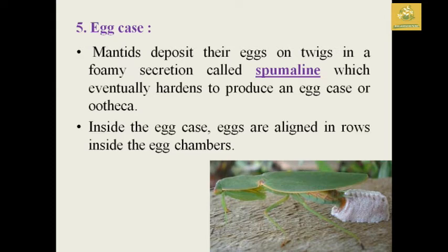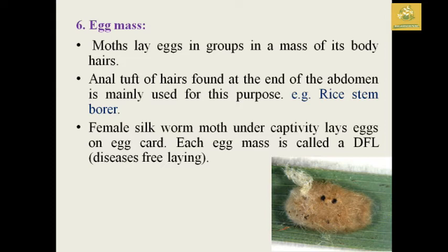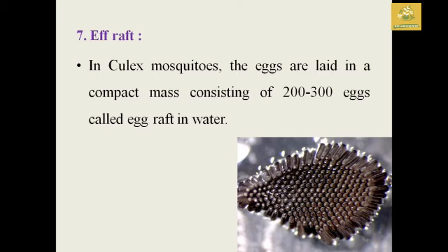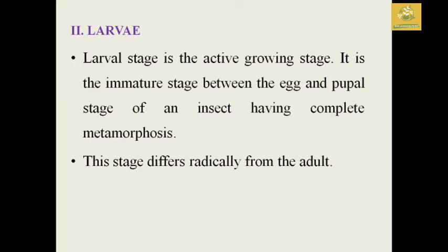The egg case is formed on twigs, known as spumaline, which eventually hardens to produce an egg case similar to the ootheca. Inside the egg case, eggs are aligned in rows with different chambers. Egg masses in moths are laid in groups covered with body hairs forming an anal tuft — for example, the rice stem borer. In silk moth under captivity, each egg is called a disease-free laying (DFL). In Culex mosquito, eggs are laid in compact rafts of 200 to 300 eggs, called egg rafts in water.